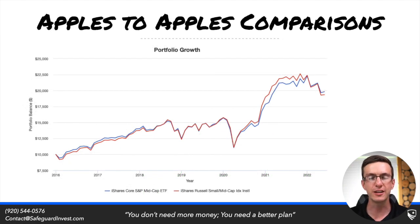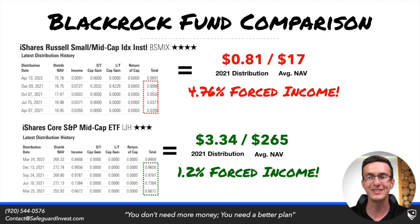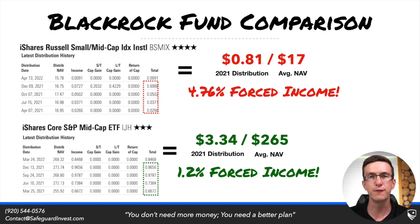Although these funds are named quite differently, they hold many of the same investments and are therefore highly correlated, following very similar performance. But the tax costs of these two investments are vastly different. Looking at the 2021 distribution from the mutual fund, there was 81 cents per share. Relative to an estimated average share price of $17, that fund distributed 4.76% of forced income to investors.